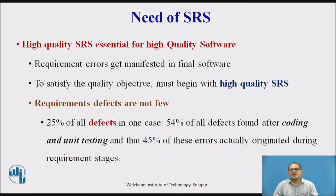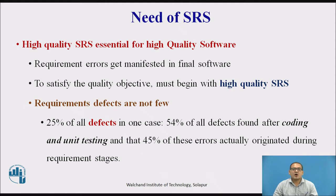A high quality SRS document is essential for high quality software. Requirements errors get manifested in the final software, so to satisfy the quality objective it must begin with a high quality SRS document. Requirement defects are not few — in some cases, 25 percent of all defects arise at the requirement phase, and 54 percent of all defects are found after coding and unit testing, with 45 percent of those errors actually originating during the requirement stage.